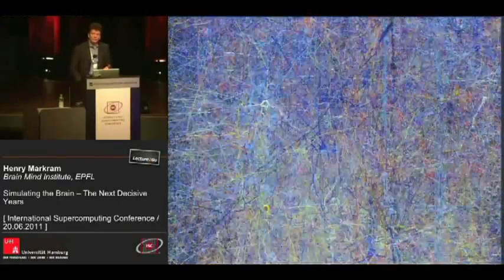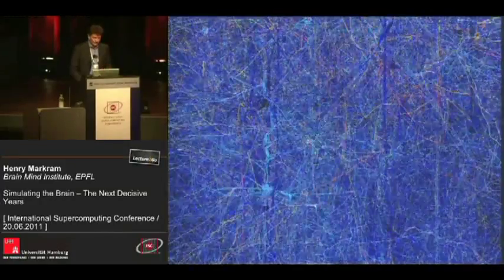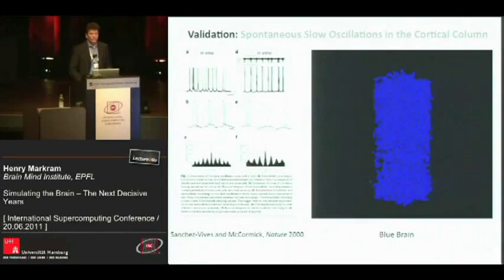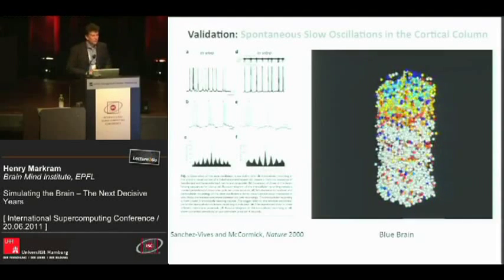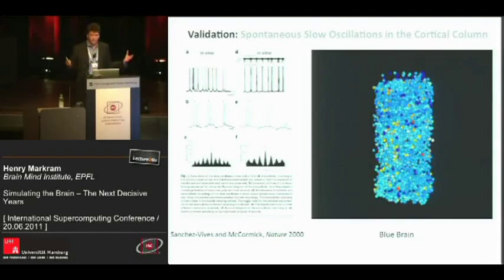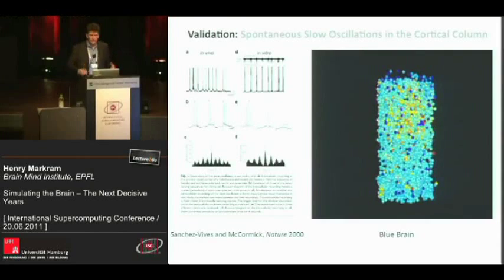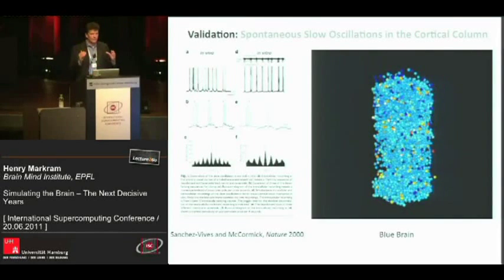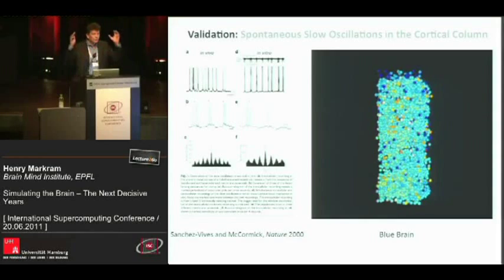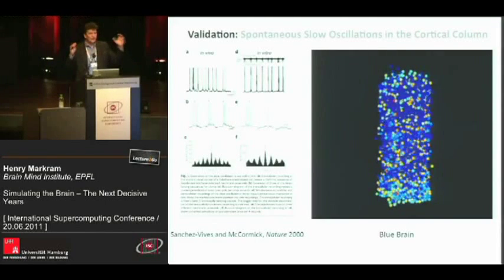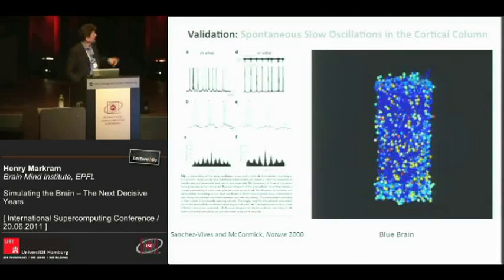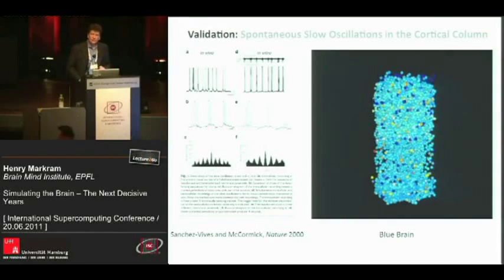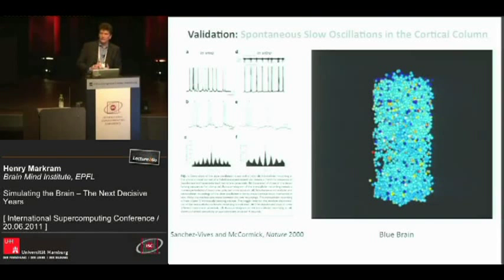When we recreate this piece of the brain, we don't try to make it perform a particular function. We call it bottom-up building and top-down validation. The model is not designed to do object recognition, face recognition, or anything intelligent. The model is built according to biological rules, and then we check to see how this model can capture experimental data.